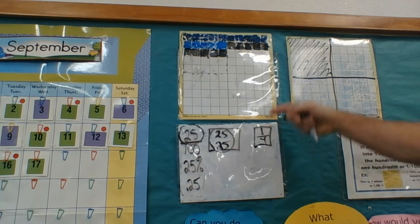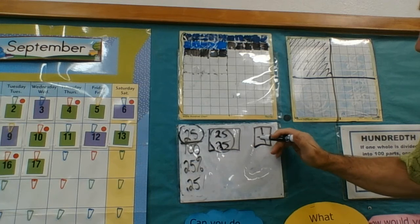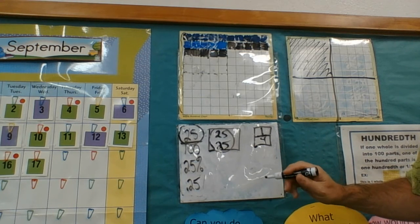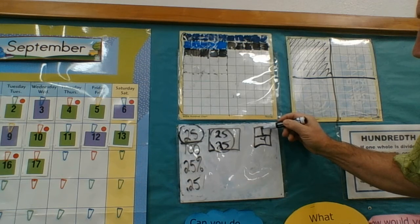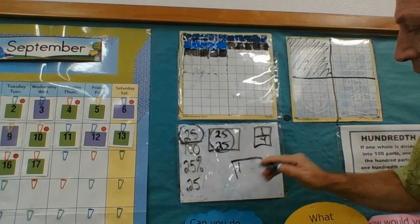And to make sure that one fourth is in fact 25% or 0.25, remember a fraction is a division problem. So we read it top to bottom, one divided by four, one divided by four.